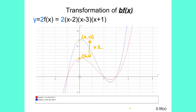If we now draw the graph of y equals 2 times f of x, which is 2 times x minus 2, x minus 3, x plus 1, you can notice that the point 0, 6 has moved to the point 0, 12. The x-coordinate remains the same. The y-coordinate has been multiplied by a scale factor of 2. Remember, f of x is the same as y.